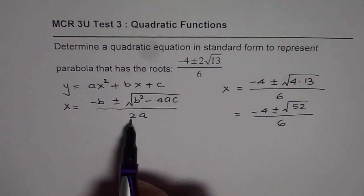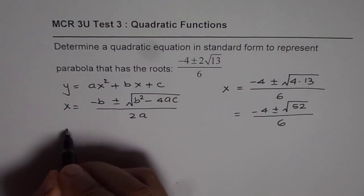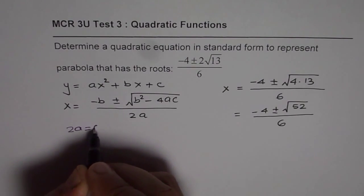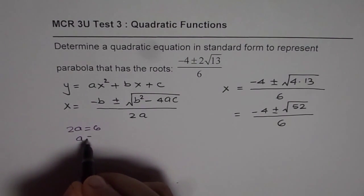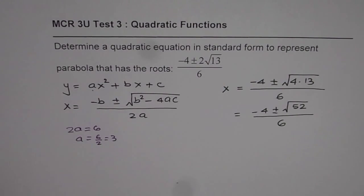Let us start comparing. 2a should be equal to 6. We will do 2a equals 6 and that gives us a equals 6 divided by 2 which is equals to 3.